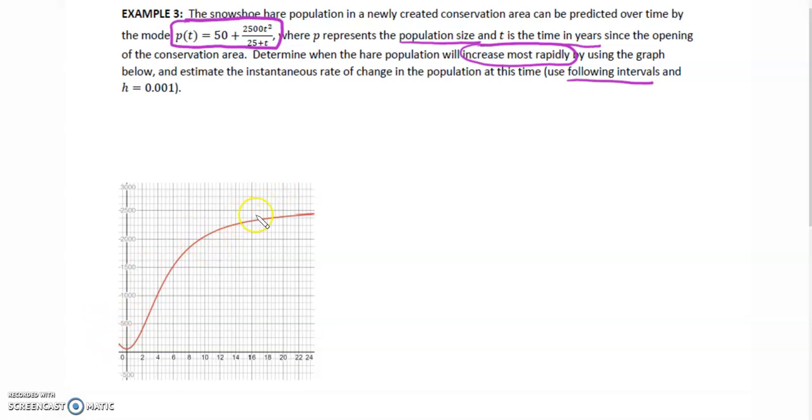Taking a look here, we want to start drawing a couple tangent lines and see which one is going to be the steepest. I would say probably around here is going to be the steepest. Maybe around 2 is going to be the steepest. So let's find P at 2. The following interval would be x plus h, which is 2 plus 0.001. They said use h as 0.001, so 2.001.